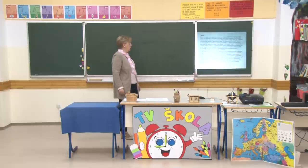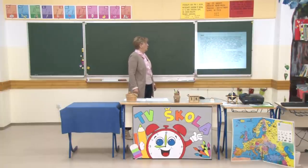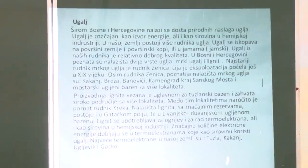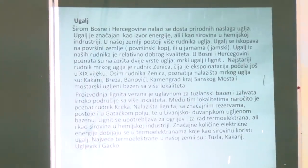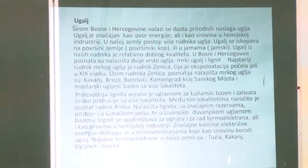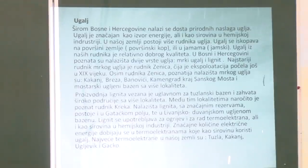U našoj zemlji, kao izvori energije, najviše se koriste ugalj, snaga vode - hidroenergija - i nafta sa svojim prerađevinama. Glavno izvorište energije naše zemlje su nalazišta uglja. Širom Bosne i Hercegovine nalazi se dosta prirodnih naslaga uglja. Ugalj je značajan kao izvor energije, ali i kao sirovina u hemijskoj industriji. U našoj zemlji postoji više rudnika uglja. Ugalj se iskopava na površini - površinski kopovi - ili u jamama. Najstariji rudnik mrkog uglja je rudnik u Zenici, čija je eksploatacija počela još u 19. vijeku.